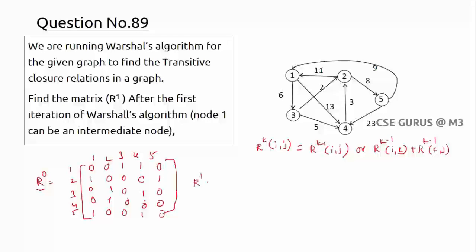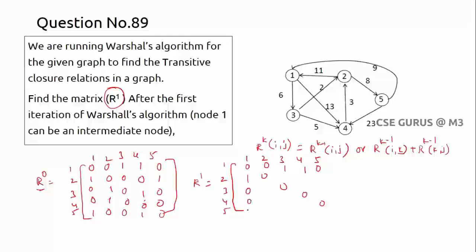So we find R^1, which is what the question is asking. For R^1, the 1st row and 1st column won't change. Self-loops won't change either. I'll write the first row and column as they are. The unchanged values from R^0 carry over: row 1 stays as 1, 0, 1, 1, 0; and row 2 starts as 1, 1 for the first two entries, then we compute the rest.